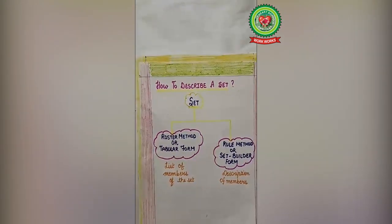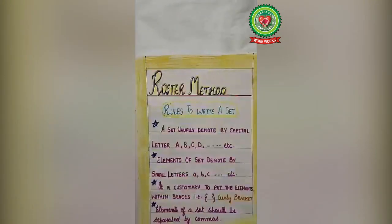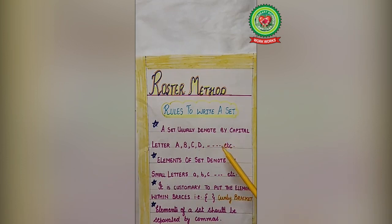Now today we will do roster form. But before that, let's see rules to write a set in roster form. A set is usually denoted by capital letters: capital A, capital B, capital C, any alphabet you can choose.